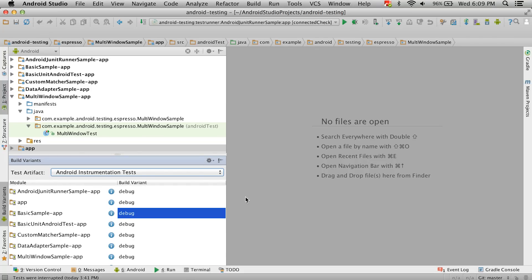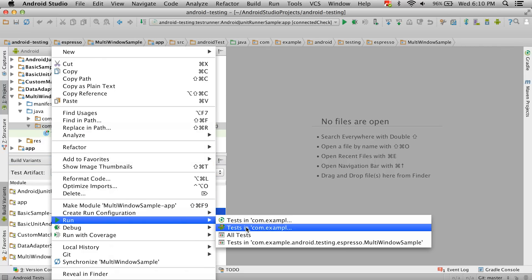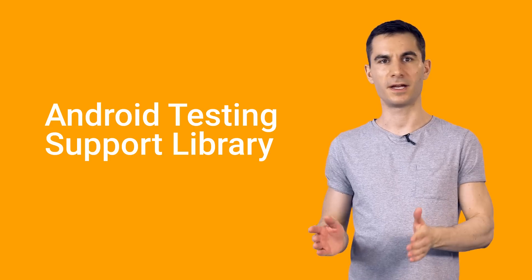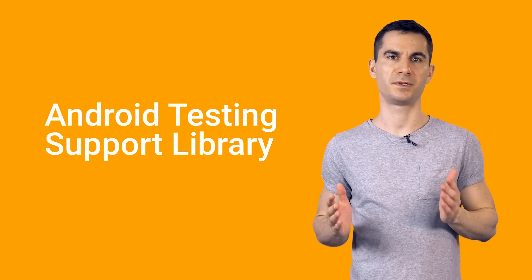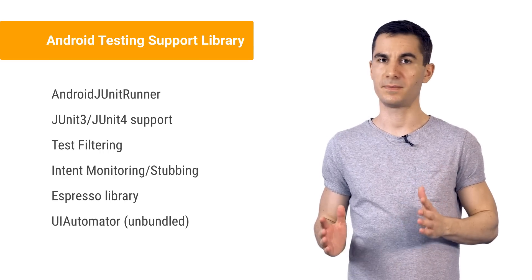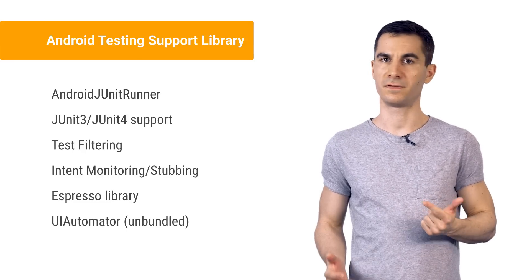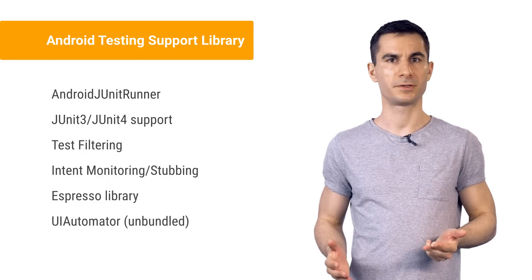For tests that need to run on the device, where the full framework is required, you can use the Android test source set. These tests will be deployed alongside your app and run on the target device or emulator. While not technically part of Android Studio or Gradle, we have recently released a library called the Android Testing Support Library, available through the Android Support Repository. It gives you the most up-to-date testing frameworks and APIs made by Google, including an Android test runner with JUnit 4 support, the Espresso library for functional UI testing, UI Automator, and more.